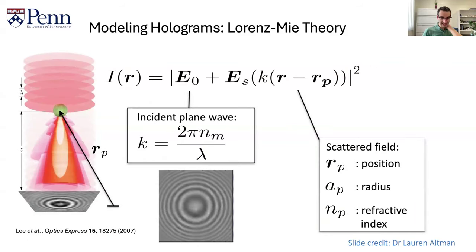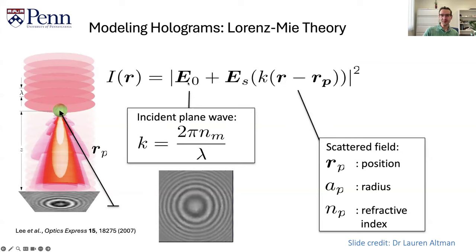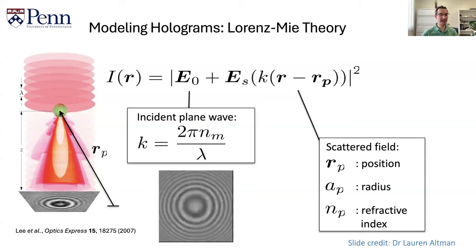Here is the main idea. We have a laser beam that shines down through your sample and interacts with your particle, changing the electric field. The intensity of the light you see is basically this electric field squared. E₀ is the unperturbed incident plane wave, and then there is the scattered field — the second term. This scattered field depends on the position of the particle, the radius of the particle, and also the refractive index of the particle relative to that of the medium. You need a little bit of contrast to scatter these waves.